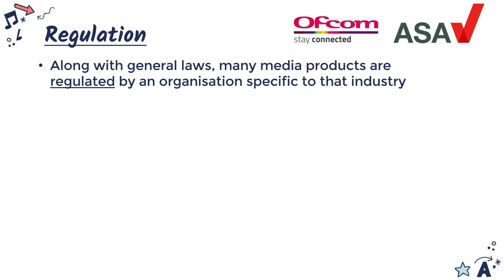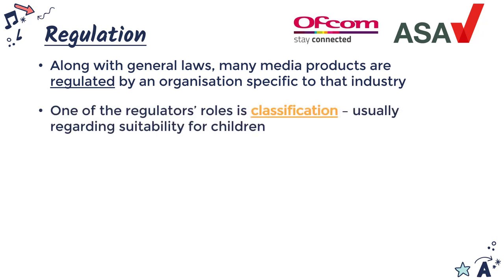The ASA — Advertising Standards Authority — is for adverts. Occasionally you may hear about a ruling; if a controversial advert appears, both agencies get inundated with complaints. They are not always belonging directly to the government — Ofcom is, but ASA isn't. However, the government at least delegates some responsibility to them to regulate a particular industry. One of the many roles that different regulators have is classification.